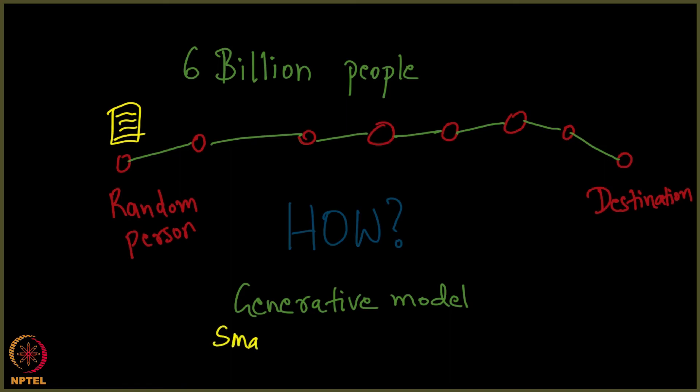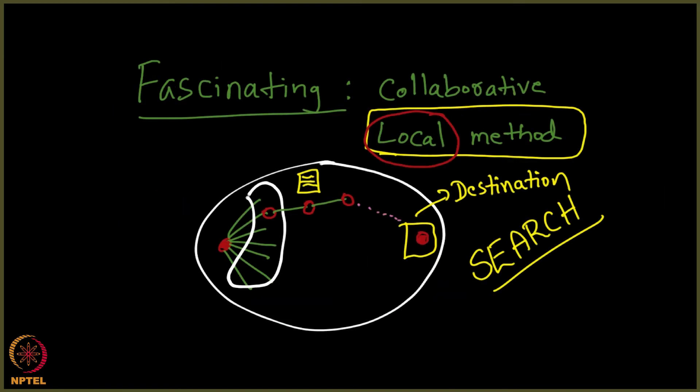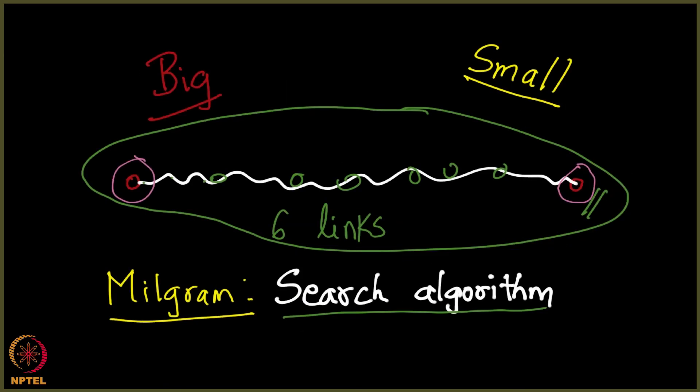Do you remember the generative model that we discussed in the previous session? The generative model called the Watts-Strogatz generative model. We showed you how to generate such graphs which have what is called the small world property, which means any two people are connected by surprisingly less number of links.